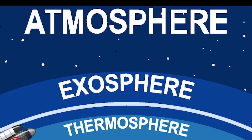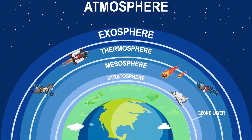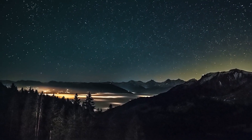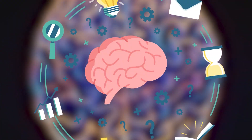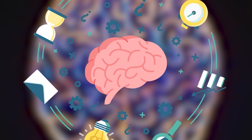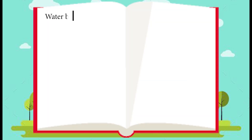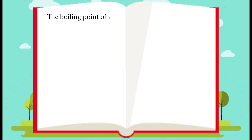The pressure caused by air is called atmospheric pressure. Atmospheric pressure changes with altitude. Now, from your childhood you may have been learning something incomplete. You study that water boils at 100 degree Celsius, but that is incomplete.